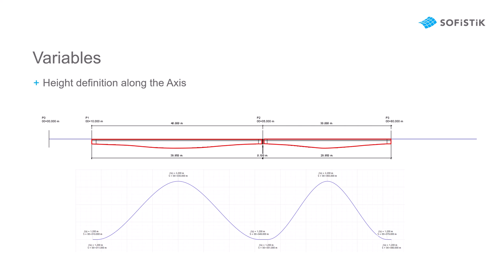Additionally, we want to have a height variation of our superstructure. This can be easily handled via variables. These variables are hosted by the main axis and can be assigned to a parameter of our two-dimensional cross section — for example, the height of our superstructure elements. We will assign this height information according to the stationing of our axis and then assign it to our parameters in the cross section family.